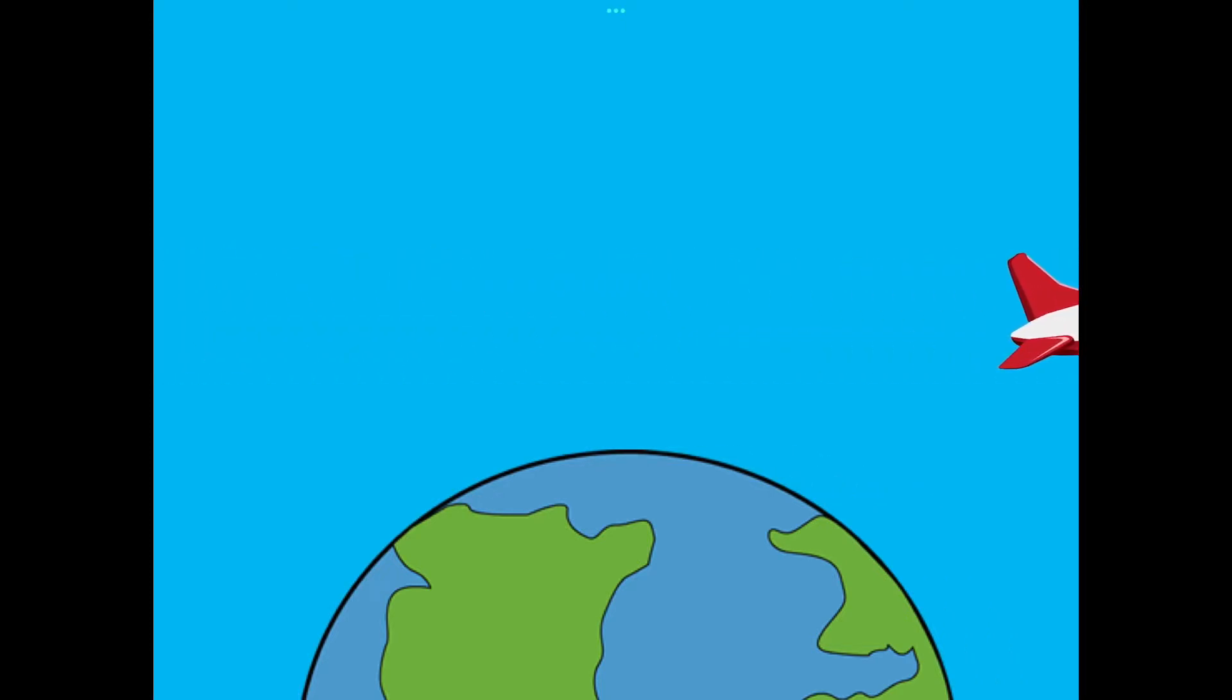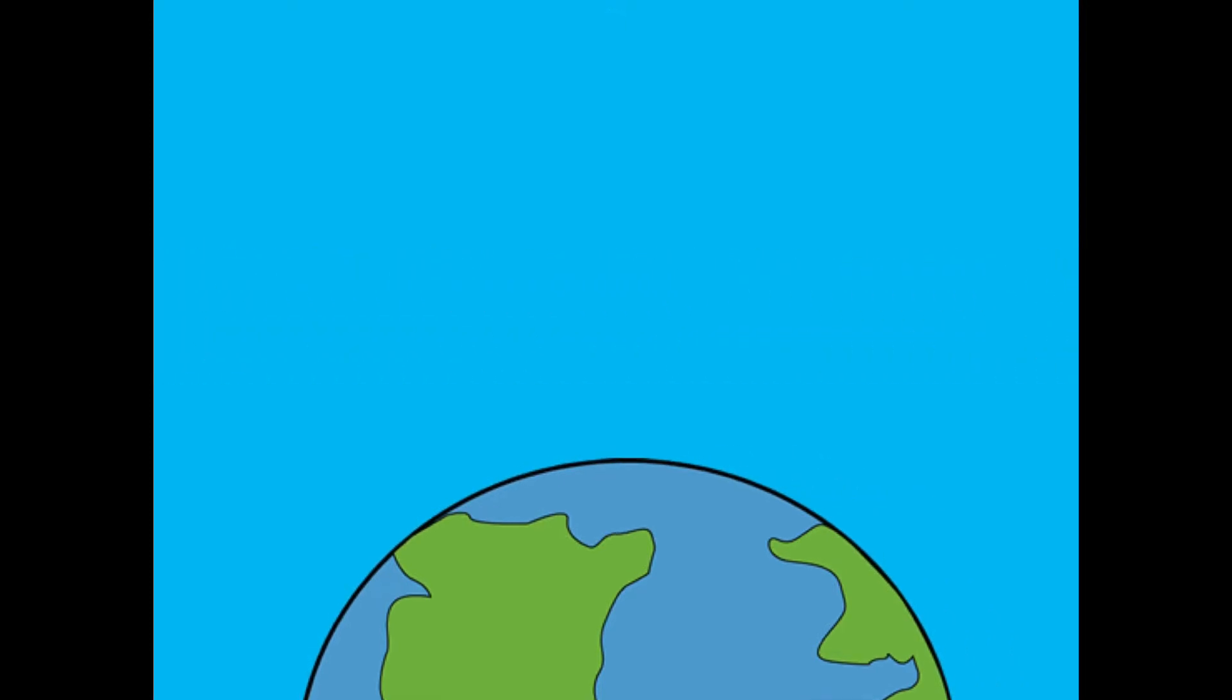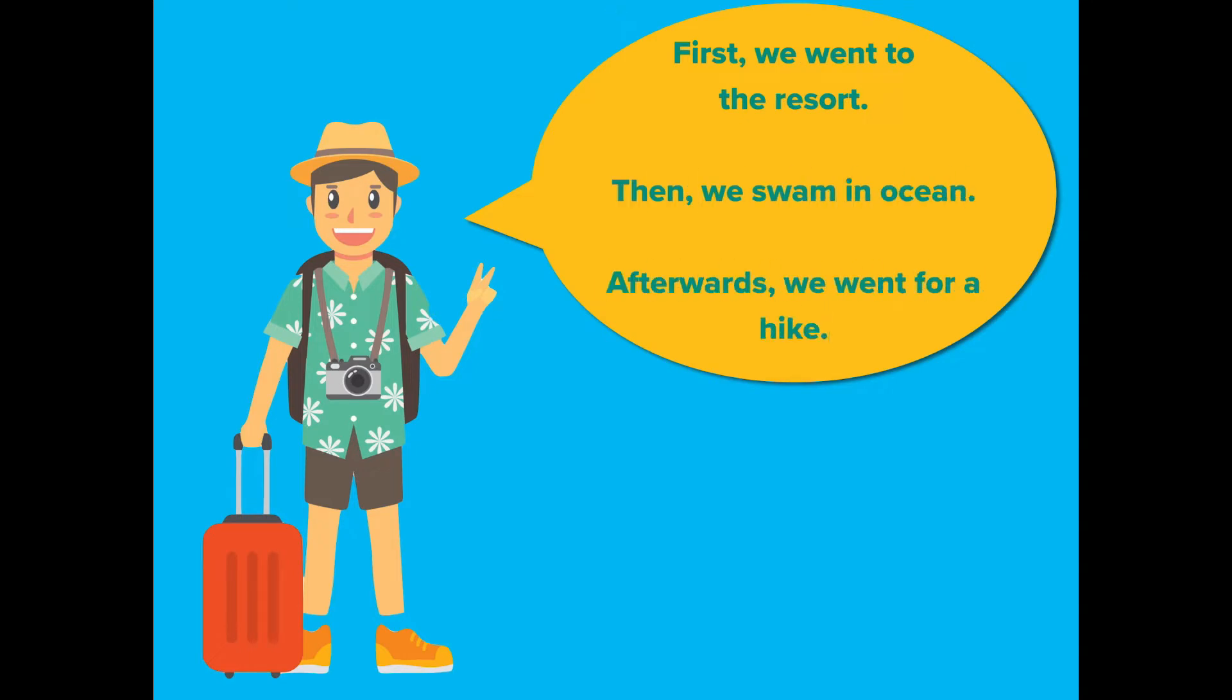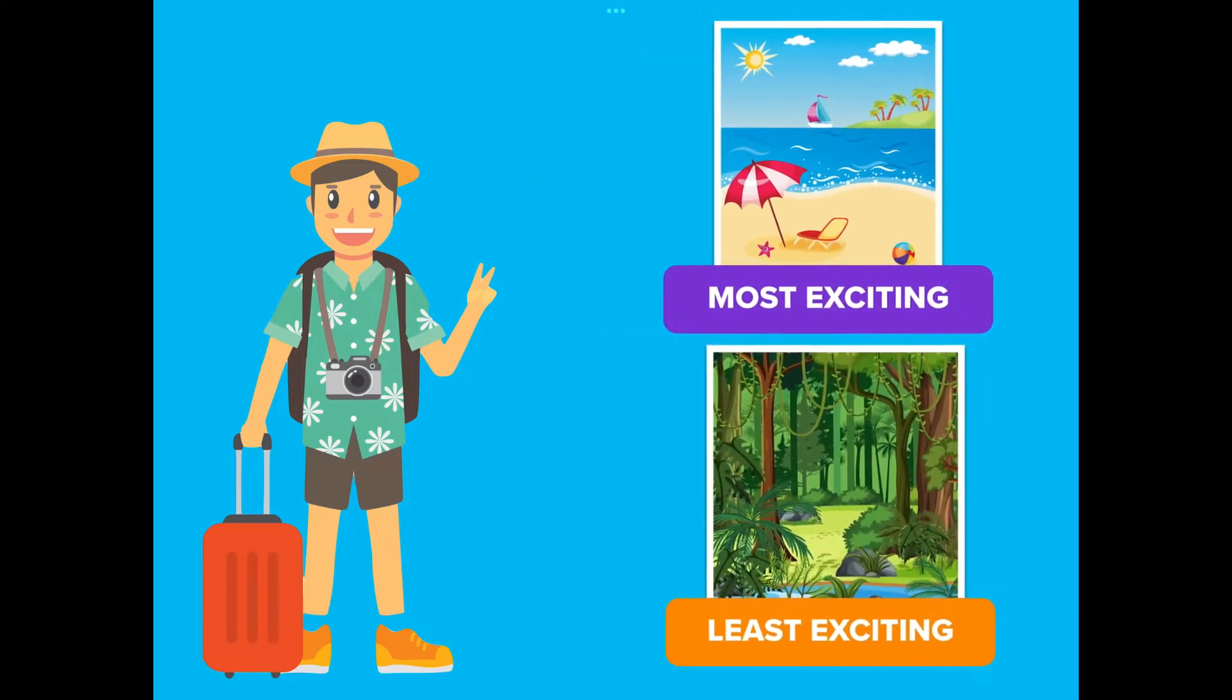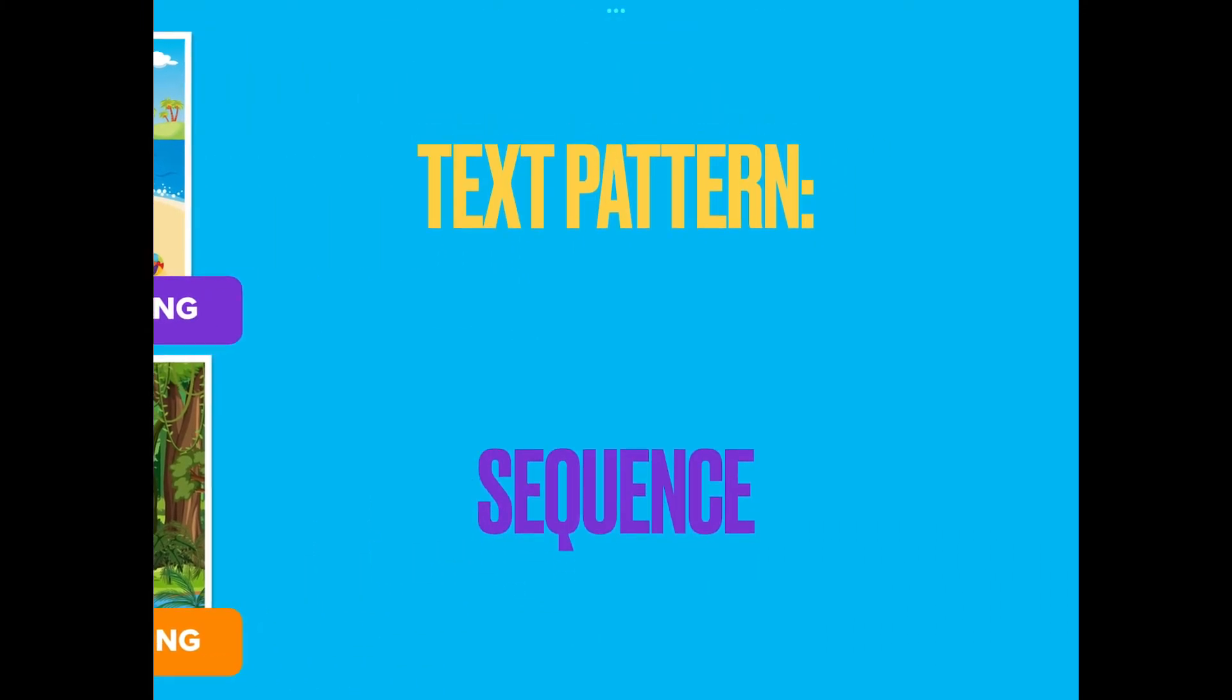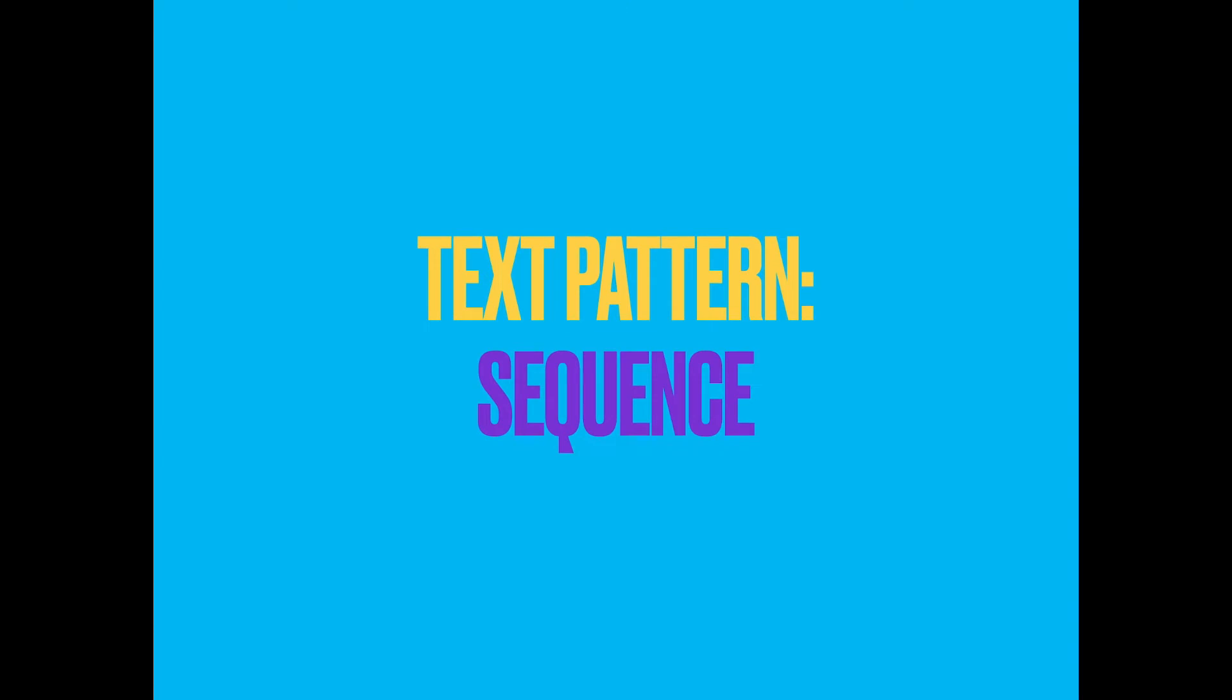You're excited about the trip you took to Brazil. You want to share all your experiences with your classmates. You could list everything that happened from when you got off the plane, or you could tell about the most exciting events first, followed by less exciting events. Both methods use sequence text pattern.